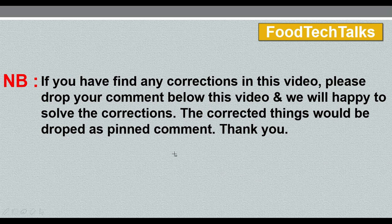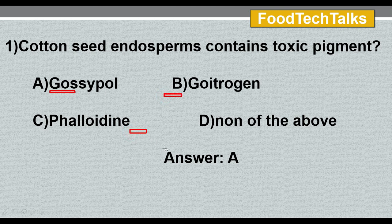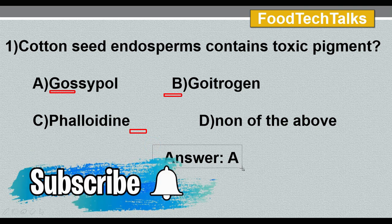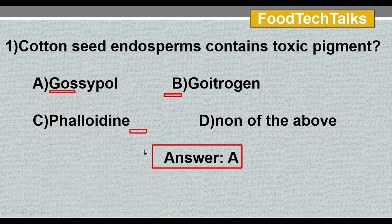Coming to today's class, we will be discussing questions for the FSO examination. First question: cotton seed endosperms containing toxic pigments — options are: A) gossypol, B) goitrogen, C) phaloidine, D) none of the above. The answer is option A, gossypol. Gossypol is the toxic pigment present in cotton seed endosperms; it acts as an inhibitor for many dehydrogenase enzymes in our body.